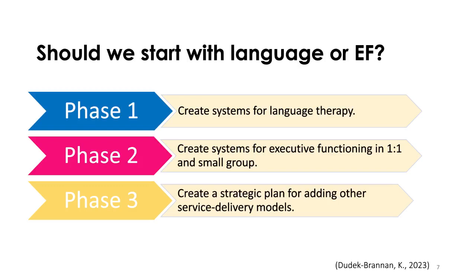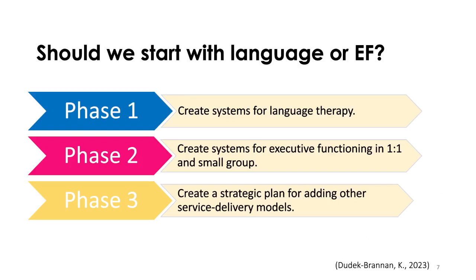We can start by thinking about what you can do with a small group or one-on-one, then once comfortable, create that strategic plan for adding other service delivery models. When you're in phase one, that doesn't mean you're totally ignoring executive functioning — it's just not your main focus when you have extra time to work on things. This gives you scaffolding for building your clinical skills. That's why I focus on things like the essential five first, before getting into more sophisticated models of working on executive functioning.